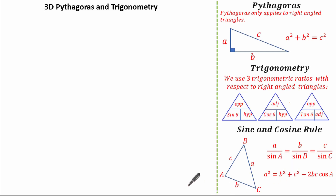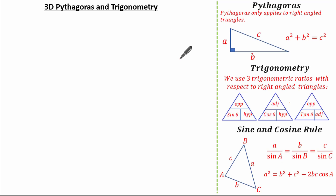Now we've gone through the prerequisites, it's important to know that when looking at 3D Pythagoras and Trigonometry, you'll get all sorts of three-dimensional shapes. It's super important that you identify your right-angled triangles where needed — they can pop up in all shapes and sizes. Let's have a look at some exam questions.